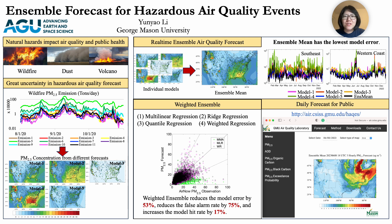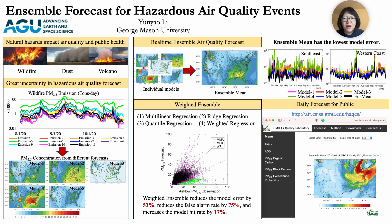Air pollution resulting from natural hazardous events such as wildfire, dust storms, and volcanic eruptions have significant impacts on air quality, public health, and climate. Advanced numerical models are powerful tools to predict the occurrence and potential impacts of these events, offering information to support decision-making, to save lives, and to reduce property damages.